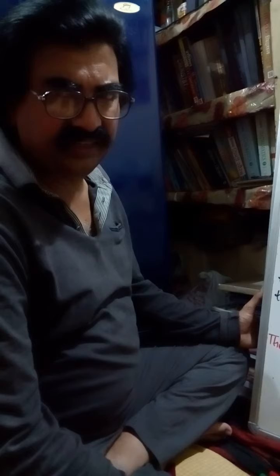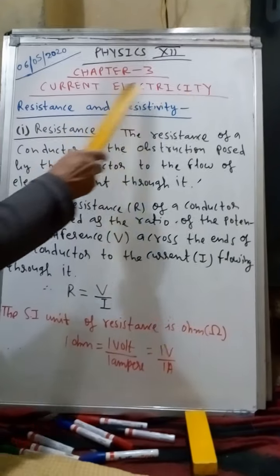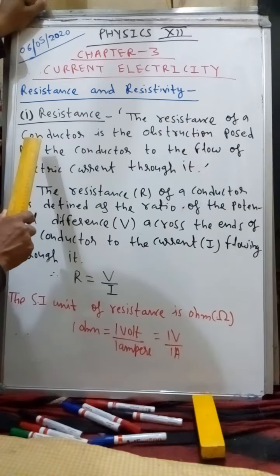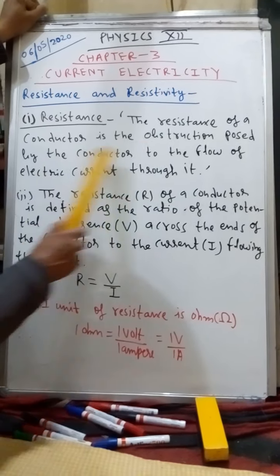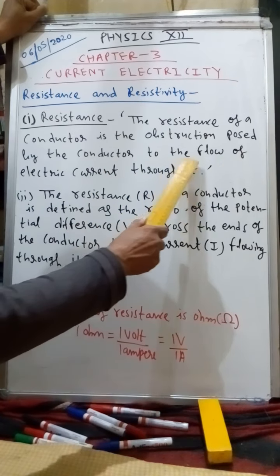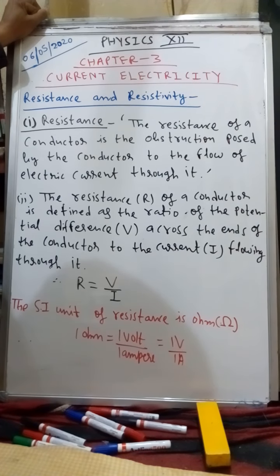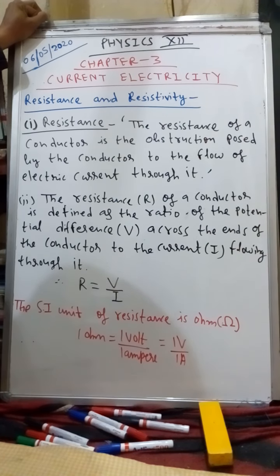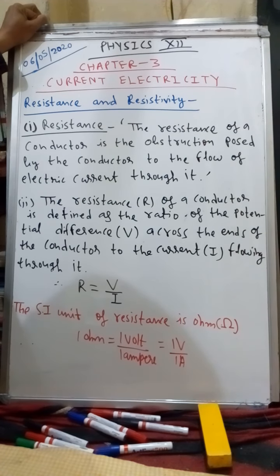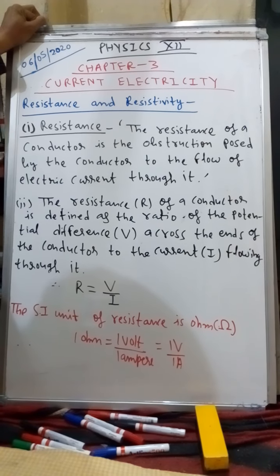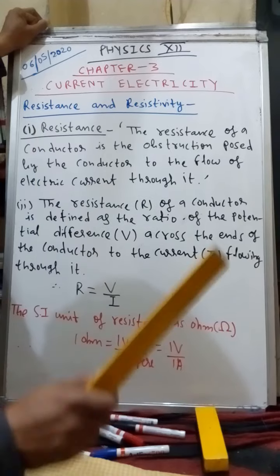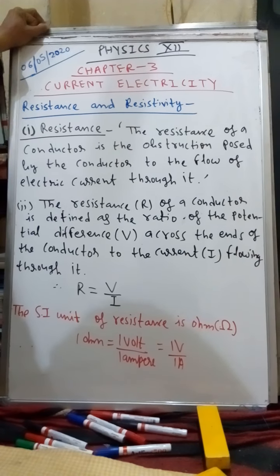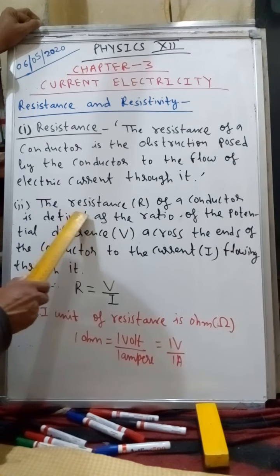Chapter 3 is the running chapter on current electricity, and the topic is resistance and resistivity. The resistance of a conductor is the obstruction posed by the conductor to the flow of electric current through it. Resistance is the property of a conductor — when current cannot flow freely, the obstruction produced by the conductor is called resistance.